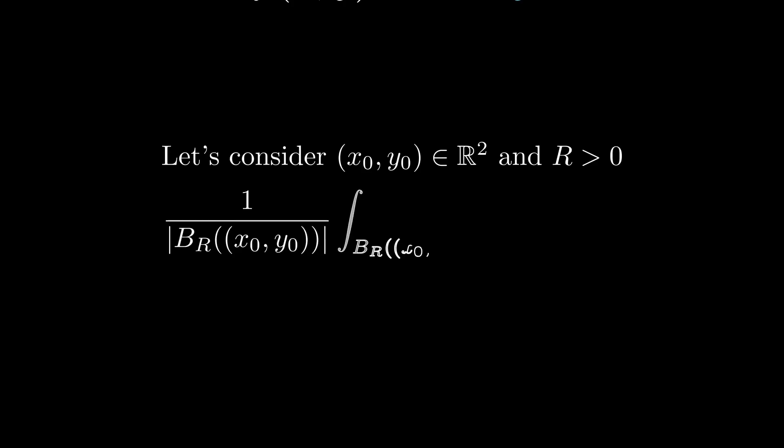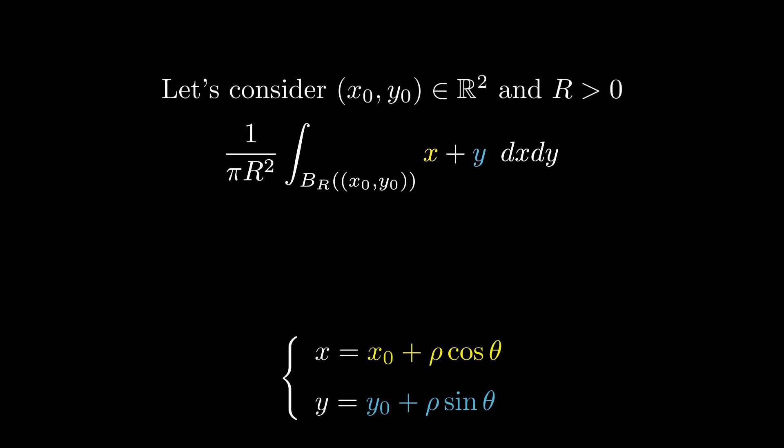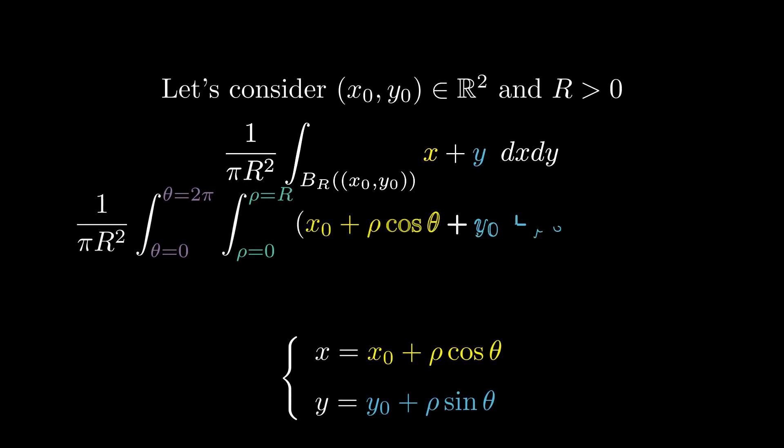Let's look at an example. Take the function f of x and y equals x plus y, which is harmonic. Compute the average value of f over a circle centered at x naught y naught with radius r. The area of the circle is pi times r squared. Switch to polar coordinates, where the Jacobian gives a factor of rho.